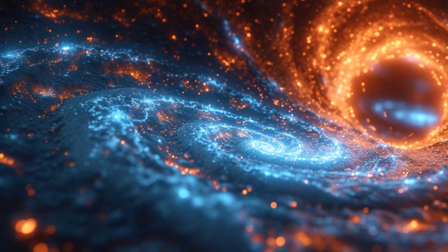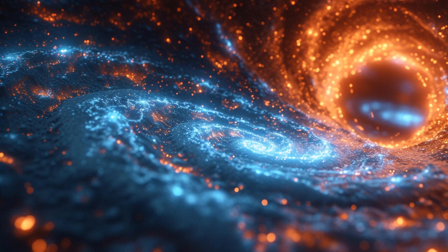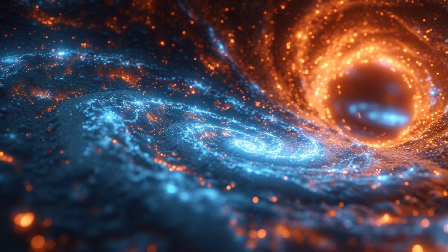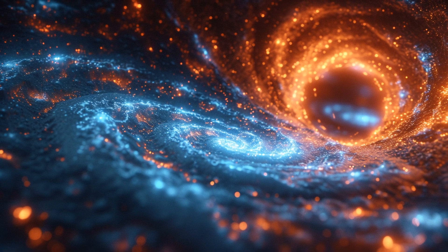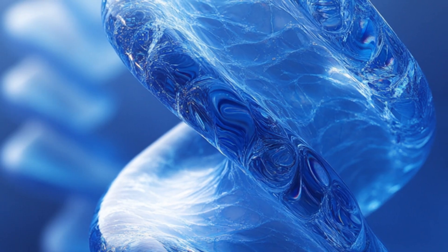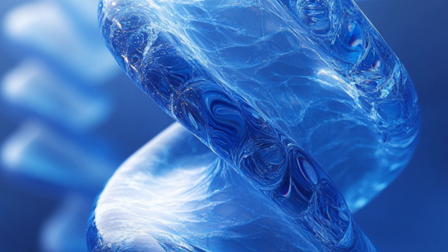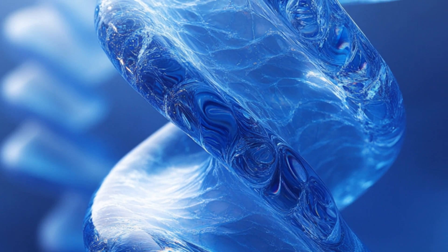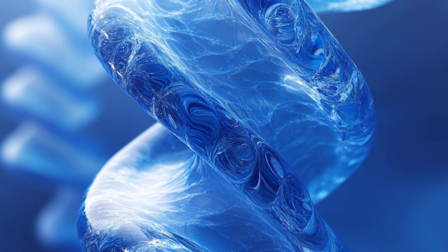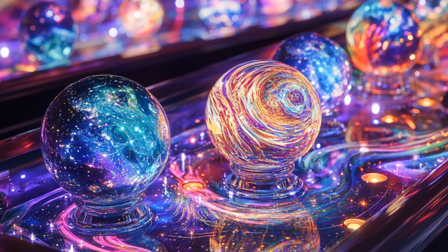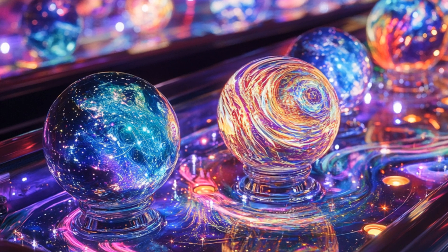Multiverse theories say there might be many universes, each with its own rules and realities. These theories suggest that our universe might be just one of countless others, each with its own unique properties. At first these two ideas seem totally separate. One is rooted in the biological sciences, while the other is a concept from theoretical physics. But if we look closer, we see some cool similarities in how they're built and how they work.